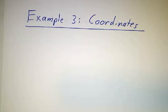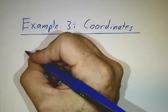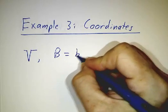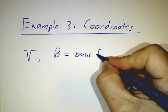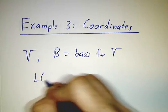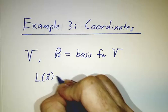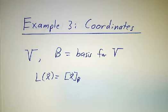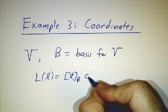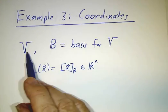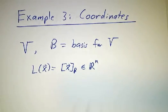Third example. Coordinates. Let's suppose V is your favorite vector space. And B is a basis for that vector space. And let's take L of any vector to be the coordinates of that vector in the B basis. And that's an element of R^n.